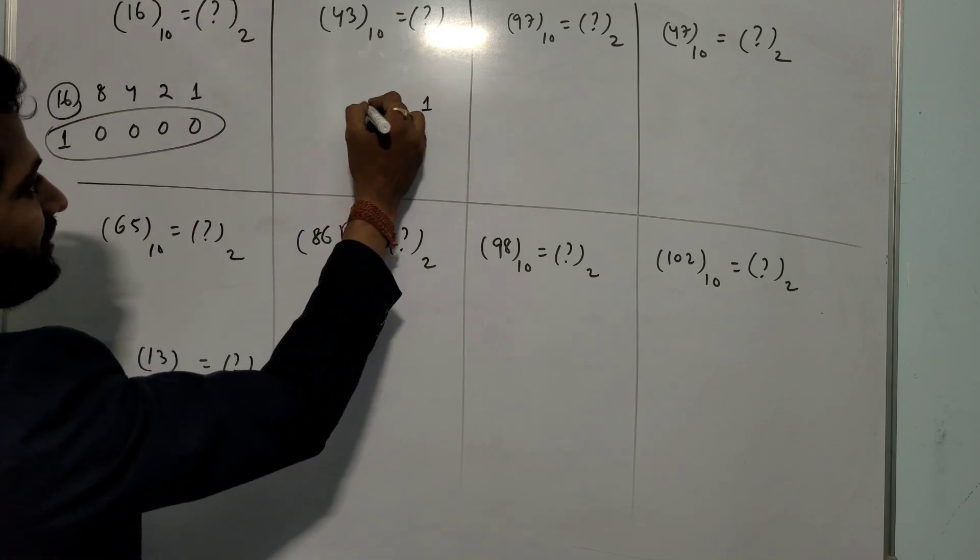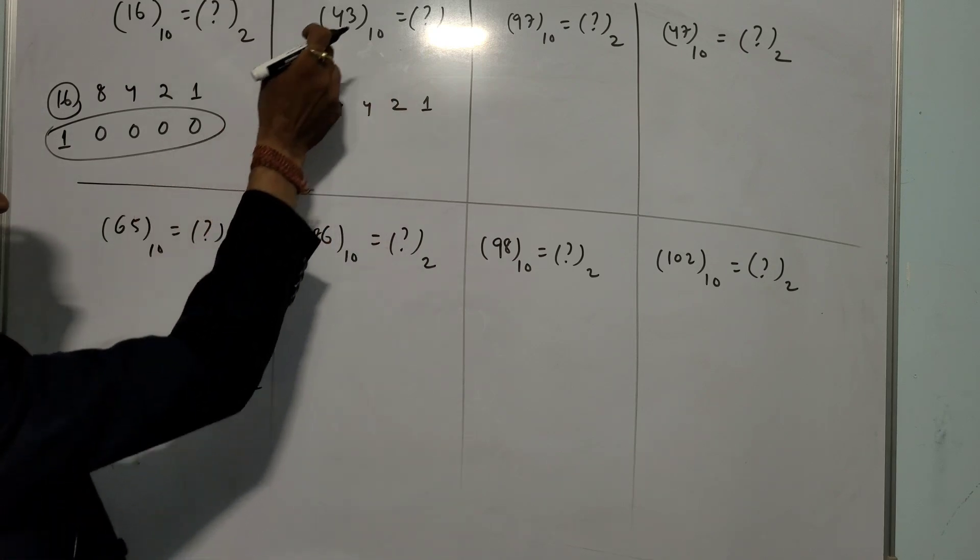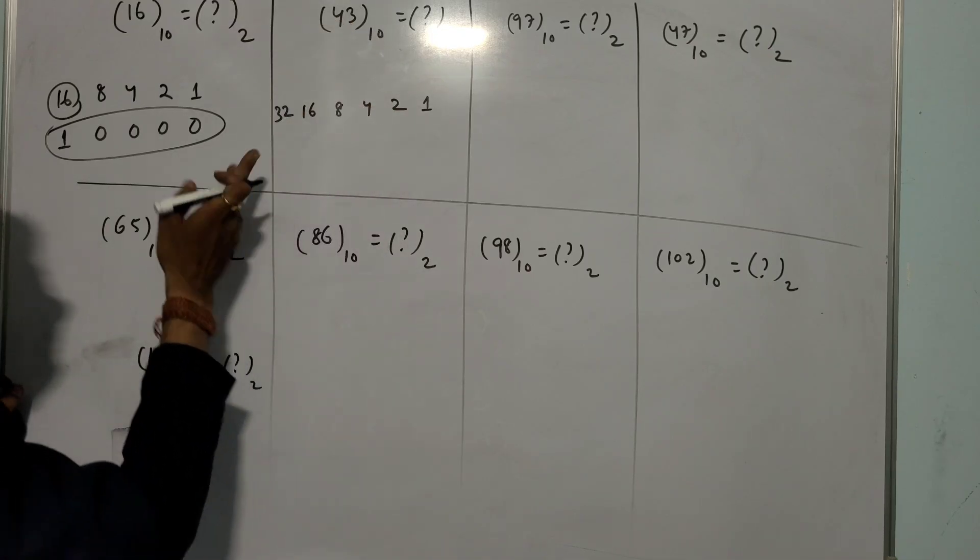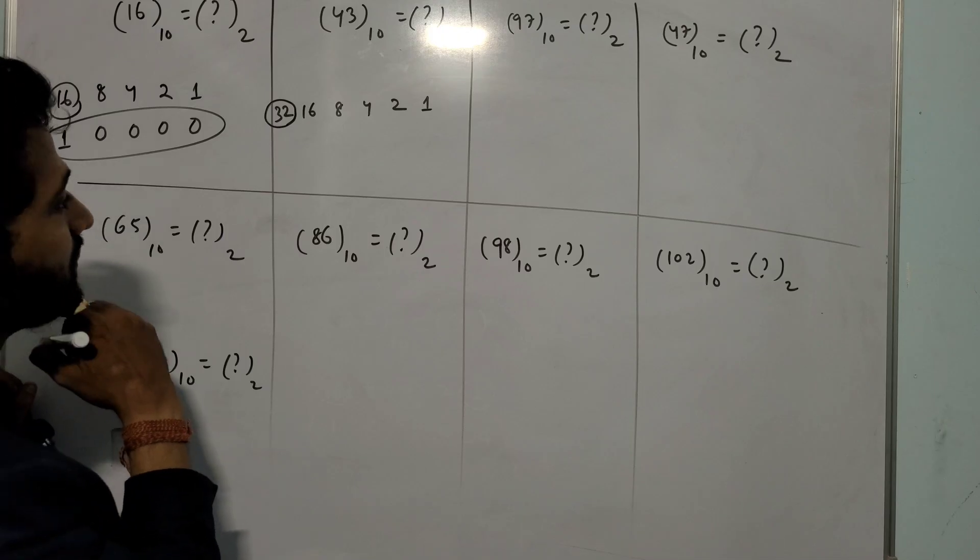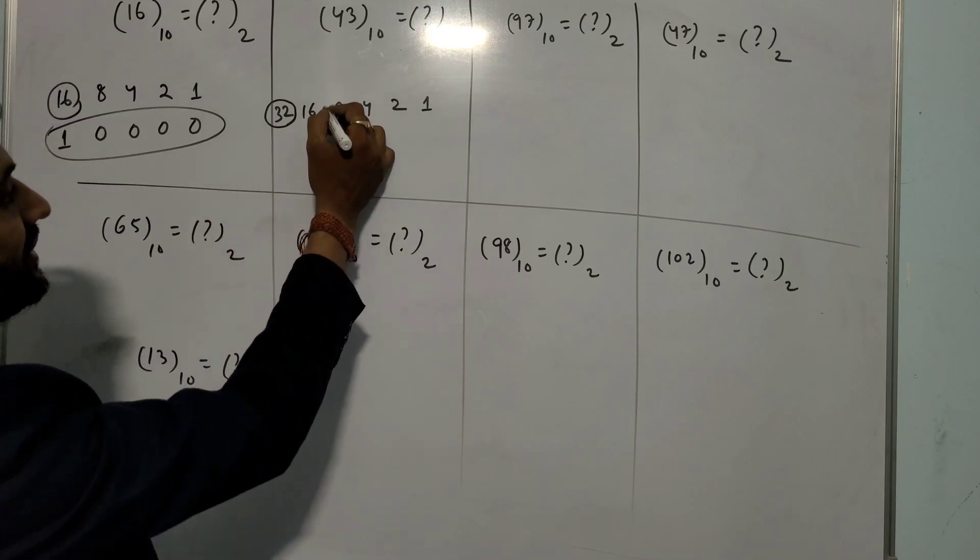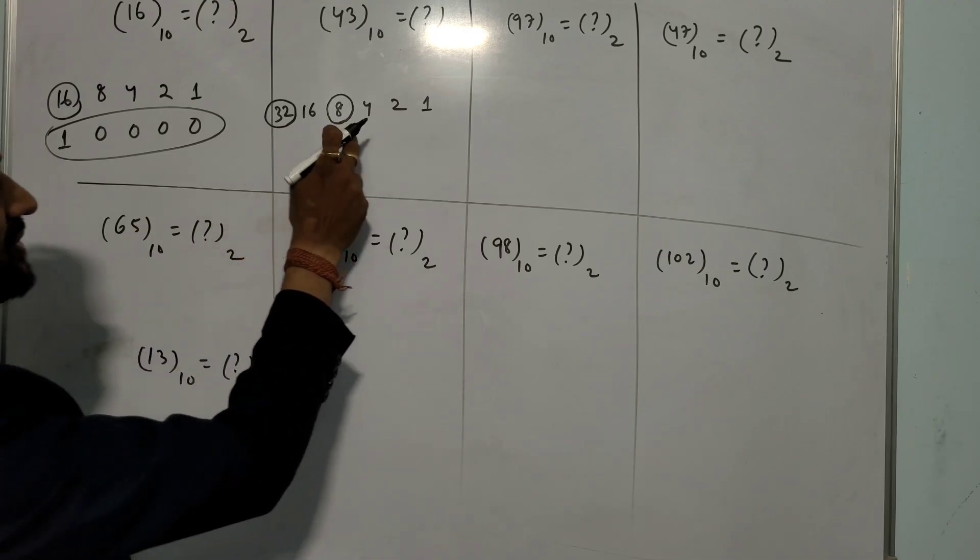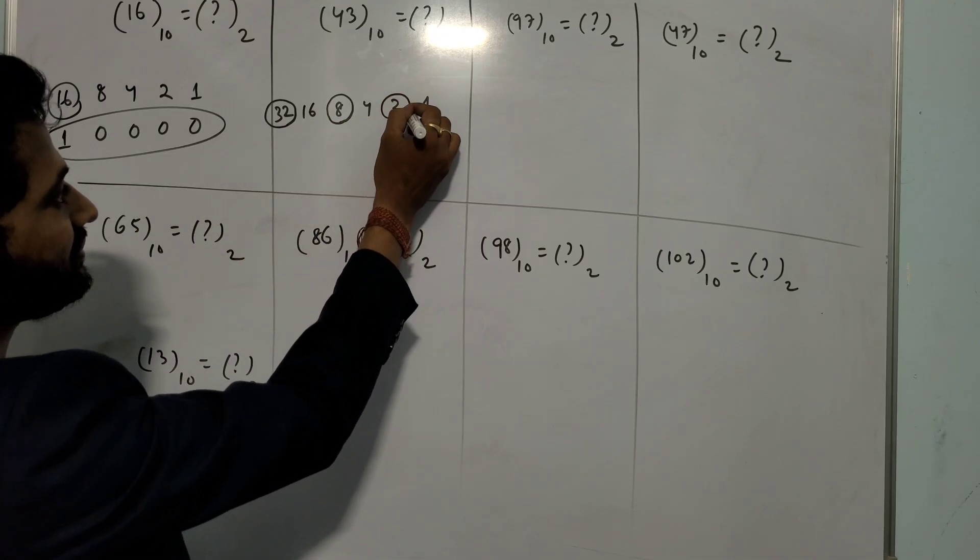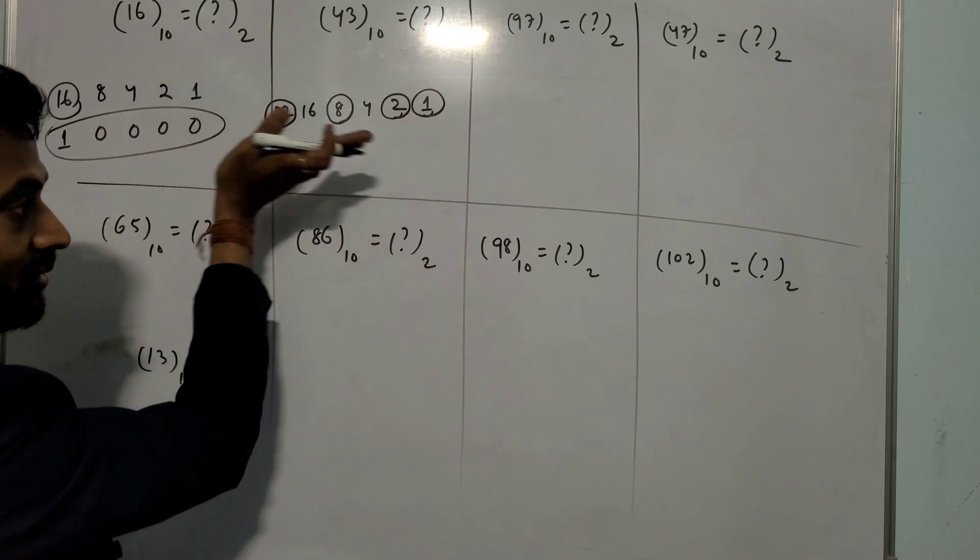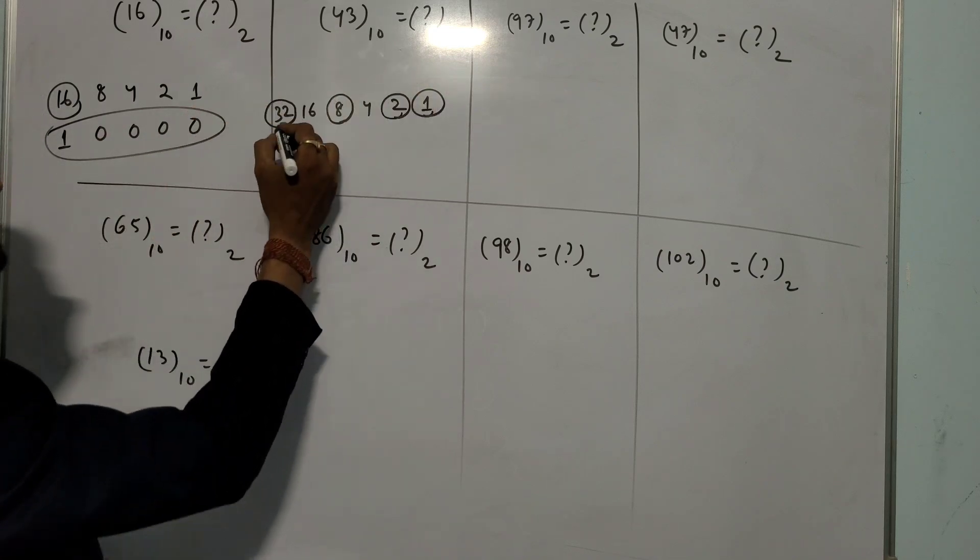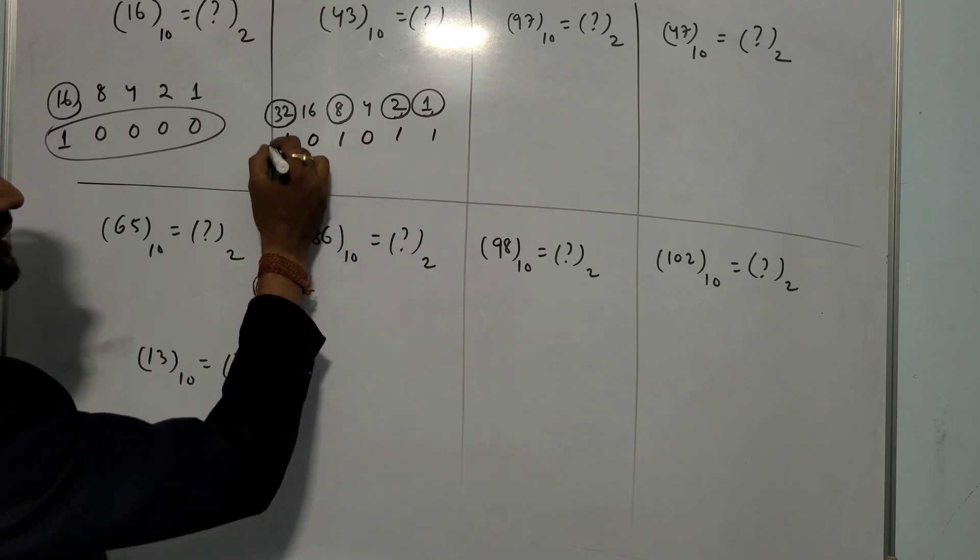43. You write 1, 2, 4, 8, 16, and 32. Then you have to make it 43 by adding these figures and we will take from the left hand side. First, we have 32. Then 32 plus 8 is 40. So 32 plus 8 is 40. Then 2, 42. Then 1, 43. Again I repeat, always we will take from this side. So answer is 101011. Next: 65 in decimal form. Same thing. You write 1, 2, 4, 8, 16, 32, then 64. Because it is 65: 64 and 1 is 65.